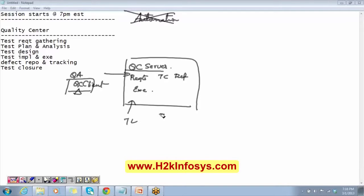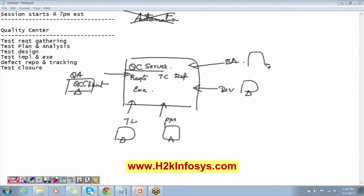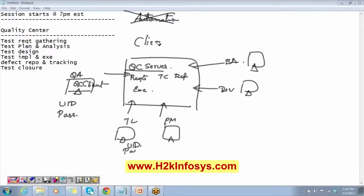All QAs in the team, the team lead, project manager, developers, and even the BA will have access to this Quality Center server. Everyone who accesses it must have the Quality Center client installed on their computer. Each user is given a different user ID and password. They log in with their credentials, and whatever changes they make get recorded, documents are created under their name, and developers can update defects. This is a client-server model — a web-based application.